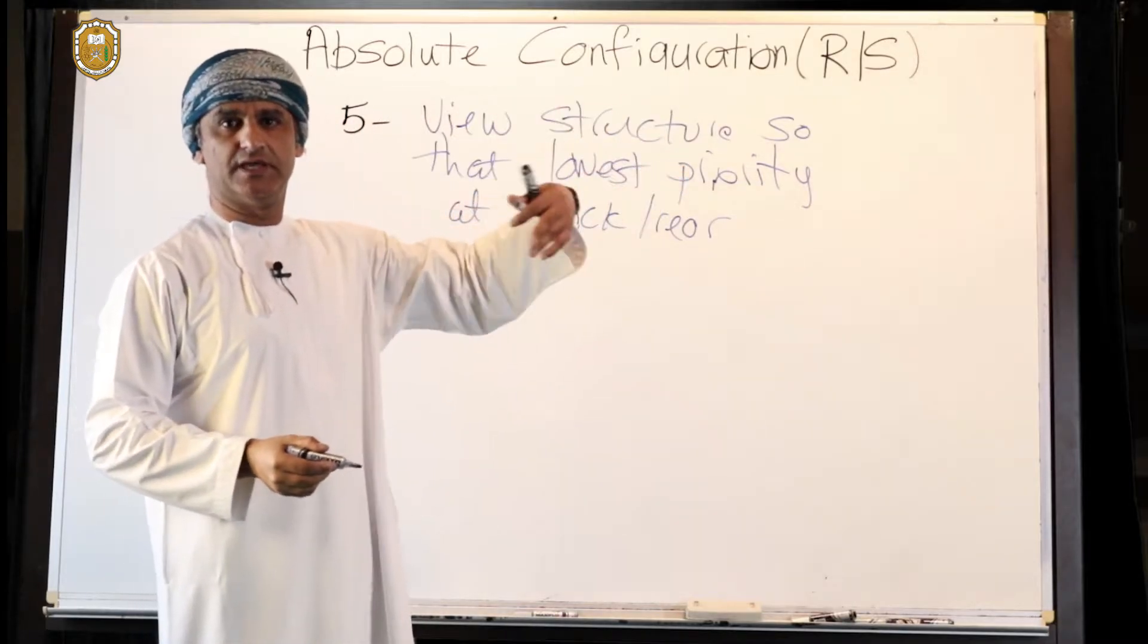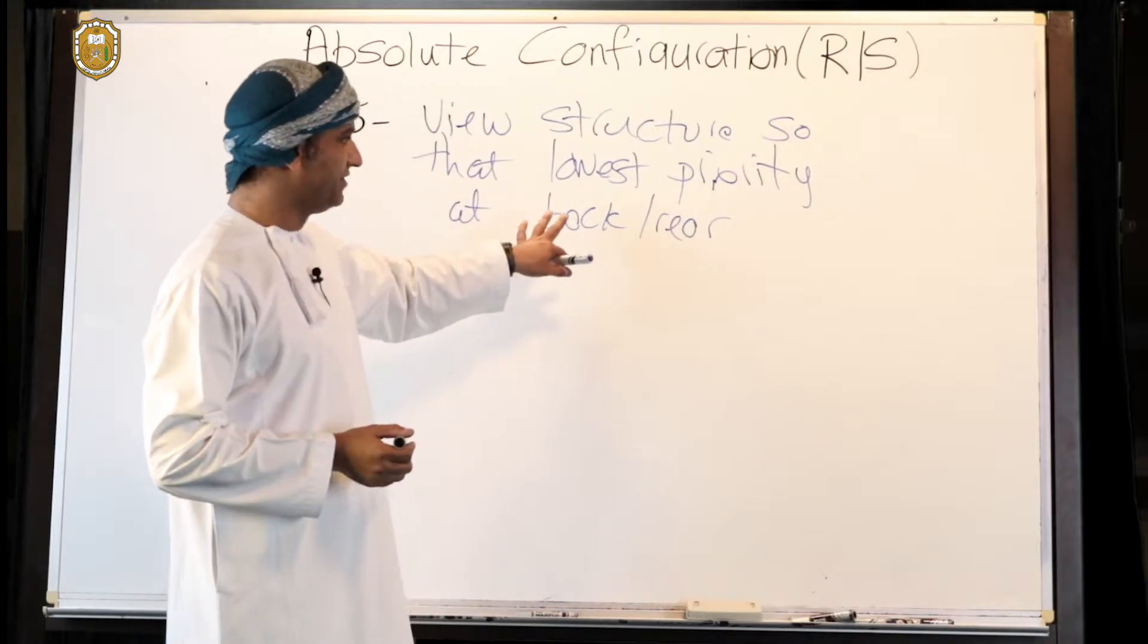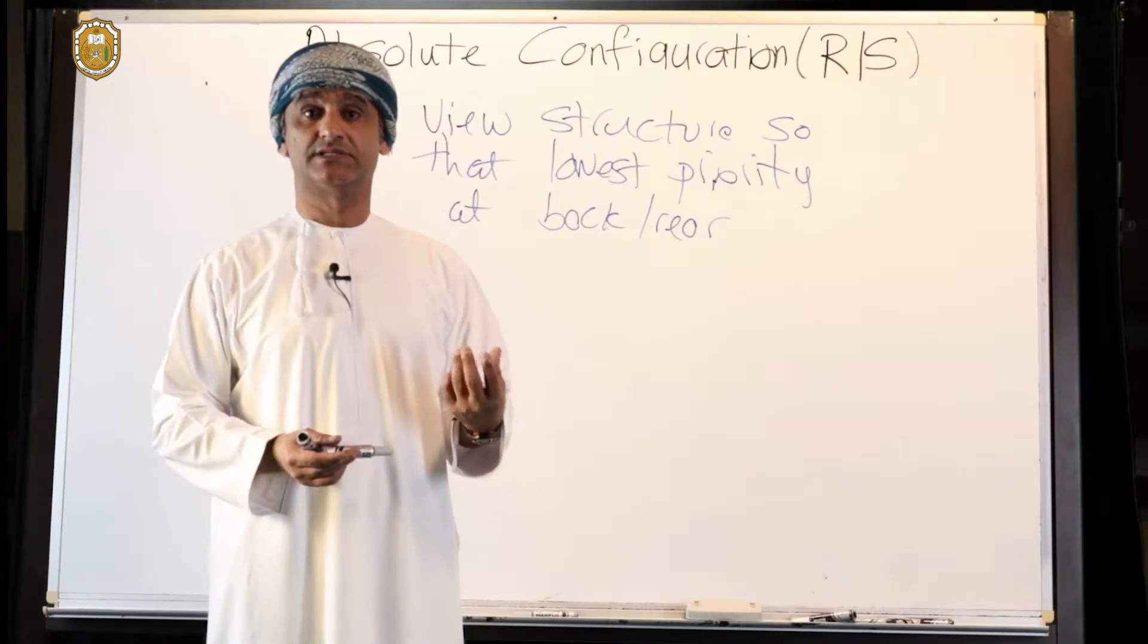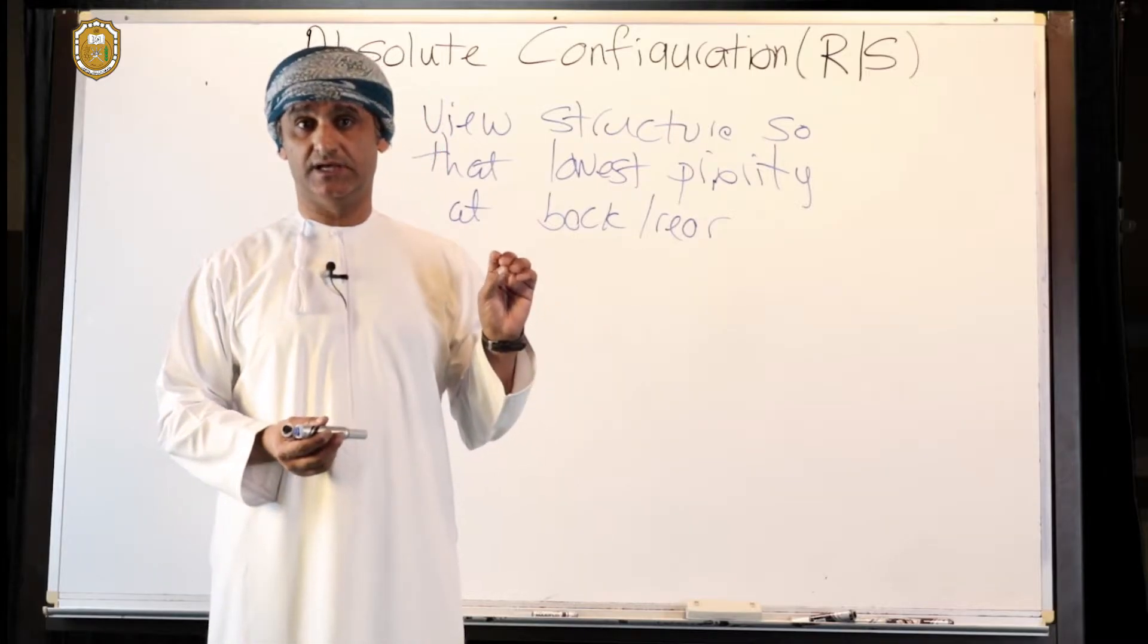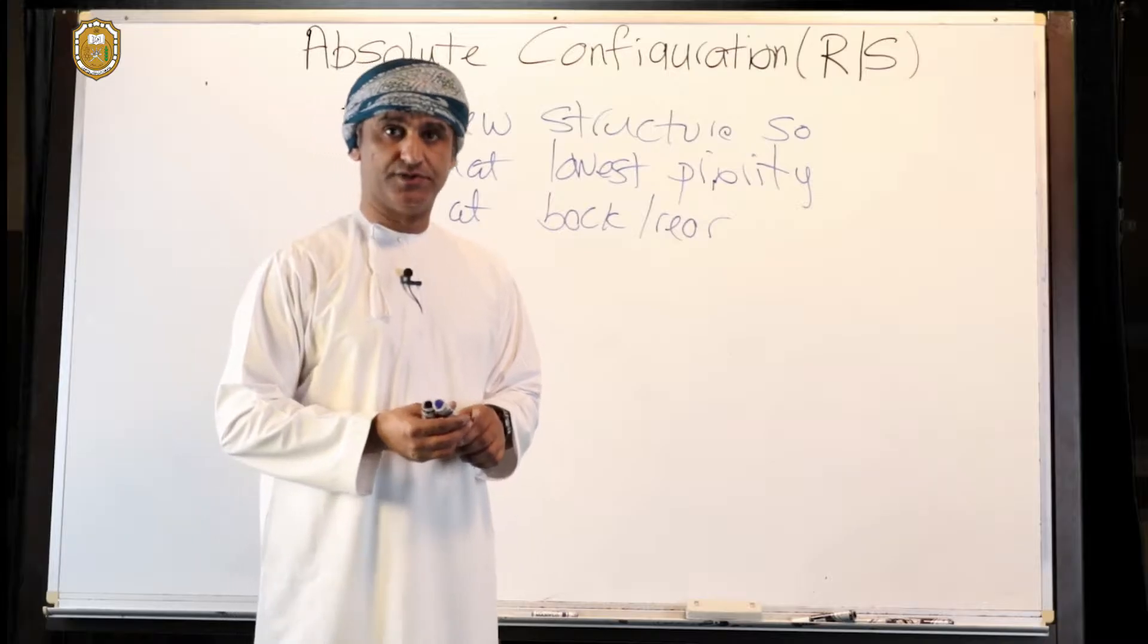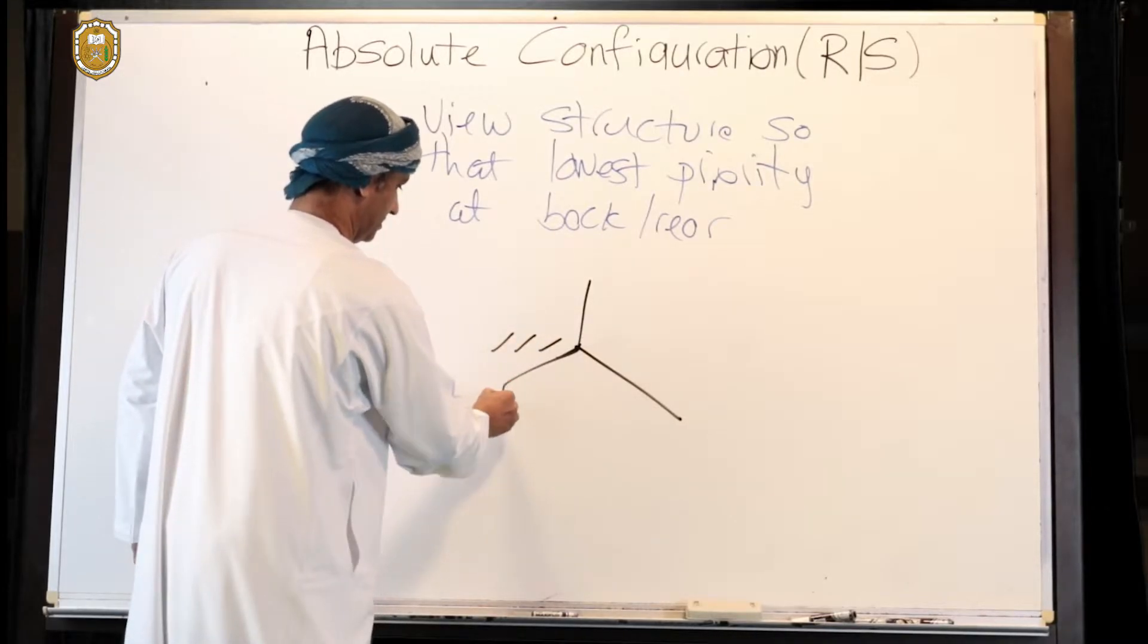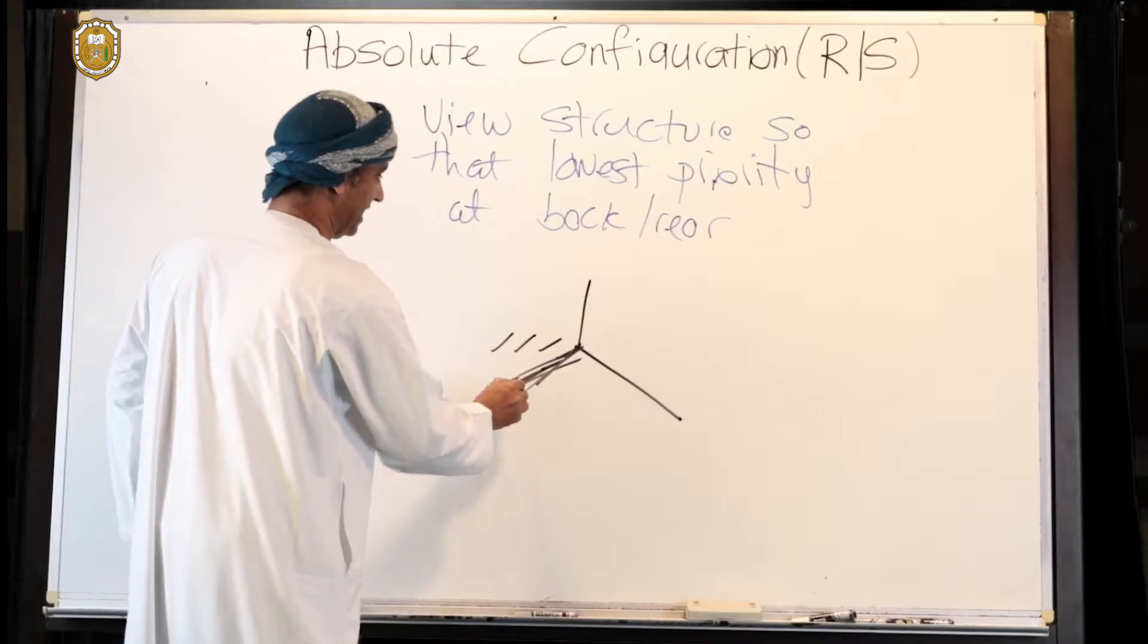This is an easy task sometimes; it's not straightforward at other times. So we have to exercise care or vision, and remember the way tetrahedral structures are drawn: there are always two bonds which are on the plane and two bonds which are outside the plane.